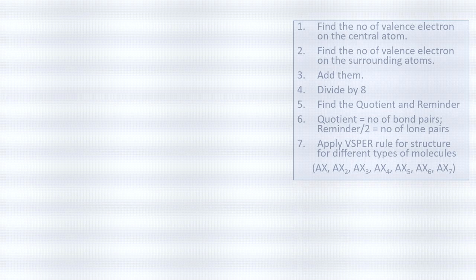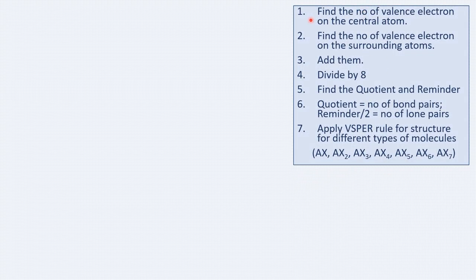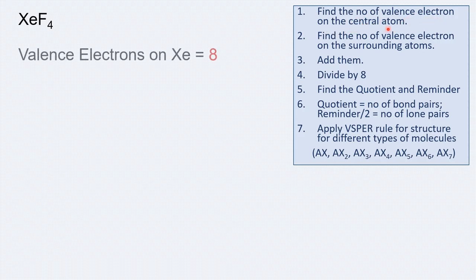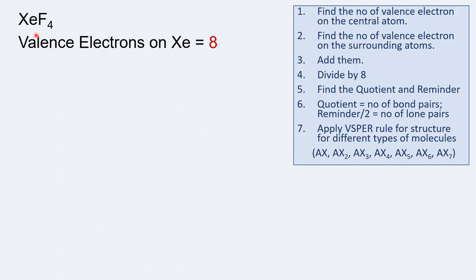The set of steps is as follows. The first step is to find the number of valence electrons in the central atom. For the first compound, xenon tetrafluoride (XeF4), the valence electrons in the central atom xenon is 8, because xenon belongs to the noble gas group and has completely filled orbitals. So the number of valence electrons is 8.